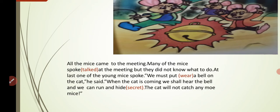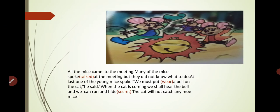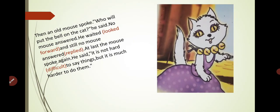So the young mouse suggested: why not put a bell around the cat's neck? When the cat comes, we will hear the bell, and we will be able to run and hide ourselves. The cat won't be able to catch any more mice. You can see in the picture all the mice were gathered in the meeting, discussing everything about the cat.